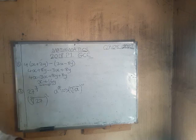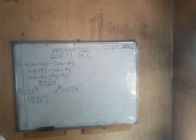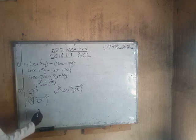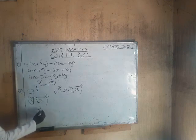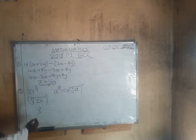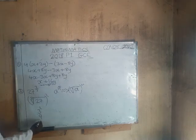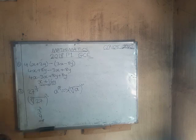We need to find the cube root of 27 — the number multiplied by itself 3 times to give 27 — which is 3. Then we raise 3 to the power 2, which gives 9. So 27 to the power two thirds equals 9.